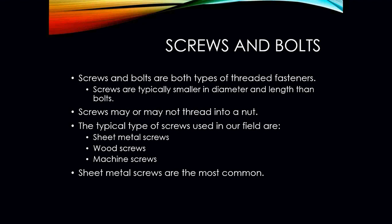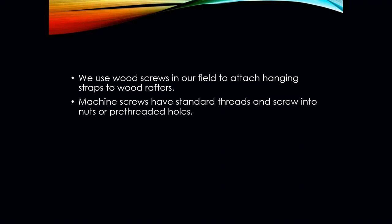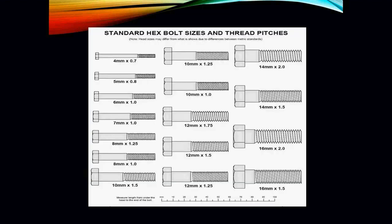The most common ones we're going to use in the field are obviously your sheet metal screws. We do use wood screws in the field to attach hanging straps to wood rafters, for example. Machine screws have standard threads and screw into nuts or pre-threaded holes. Here you have an example of a standard hex bolt sizing and thread pitches of different types of bolts that you are going to see out there.